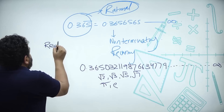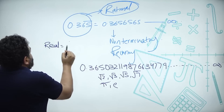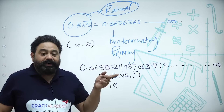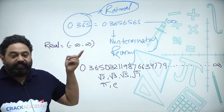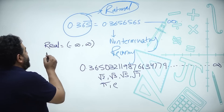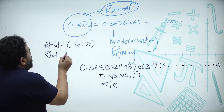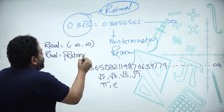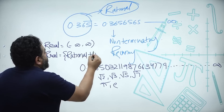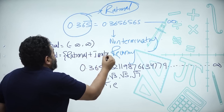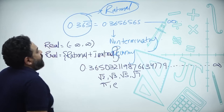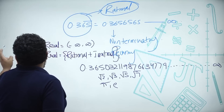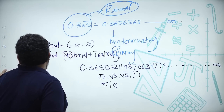After irrational comes real numbers. Real numbers are all numbers from minus infinity to infinity. More precisely, real numbers equal rational numbers plus irrational numbers — that is what real numbers are.